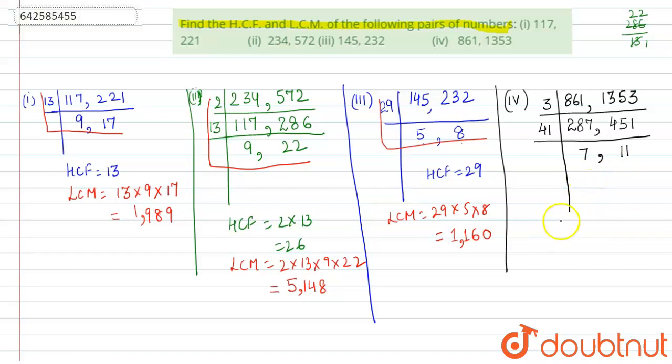So we'll stop here. And HCF we can see is 3 times 41, that is 123. And for LCM, we are going to make the L and multiply all the numbers along L. So LCM is equal to 3 × 41 × 7 × 11.